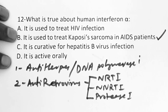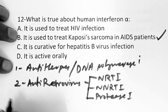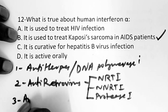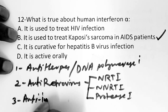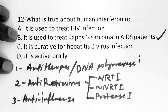Examples of protease inhibitors include ritonavir, indinavir, nelfinavir, etc. The third main category is anti-influenza drugs. Examples are amantadine and rimantadine.